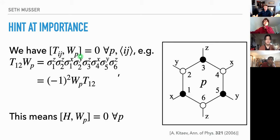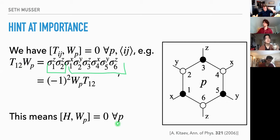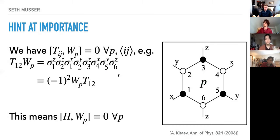The interesting thing is that all of these hopping operators commute with all of these plaquette operators. You can see this directly: write out the plaquette, look at one hopping operator — you get a minus sign when you commute sigma_1 through, and another minus sign for sigma_2, so they cancel. This means we have an infinite family of conserved quantities W_p. Since W_p is Hermitian and squares to one, we have plus or minus ones on every plaquette that are conserved. That's a hint the model might be interesting.